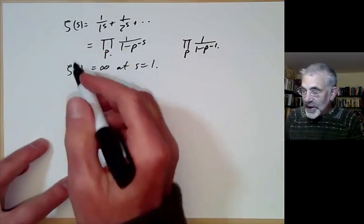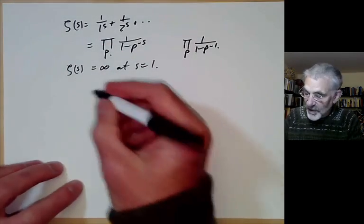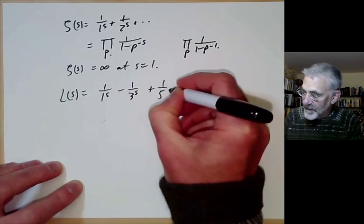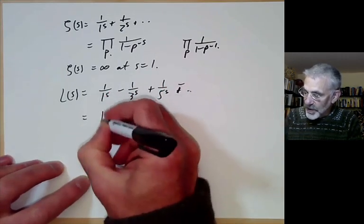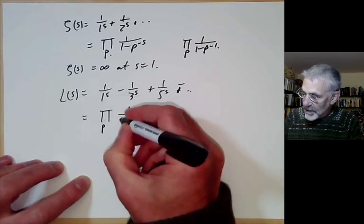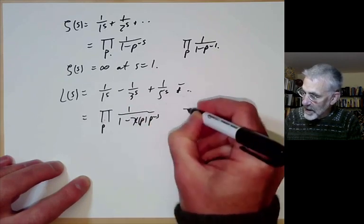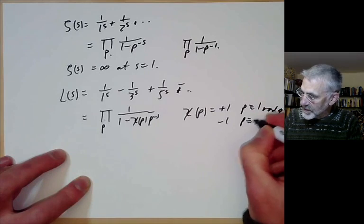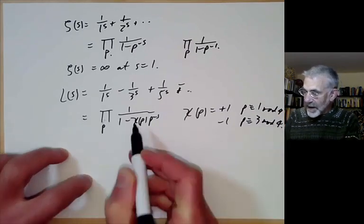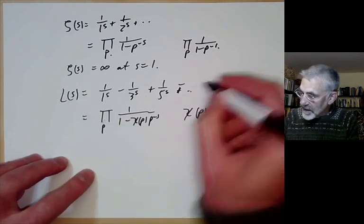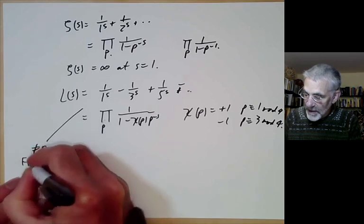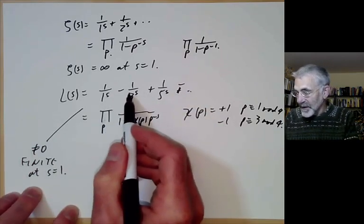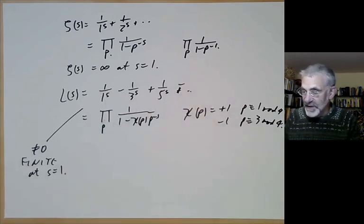In an earlier lecture, we showed a variation of this. You could show there are infinitely many primes that are 1 or 3 mod 4 by using the series L of s, which is 1 over 1 to the s minus 1 over 3 to the s plus 1 over 5 to the s and so on. This also has an Euler product: the product over p of 1 over 1 minus chi(p) times p to the minus s, where chi(p) equals plus 1 if p is congruent to 1 mod 4 and minus 1 if p is congruent to 3 modulo 4. This series is non-zero and finite at s equals 1 — it's an alternating series, and we can see it's non-zero because the sum of each pair of terms is positive.